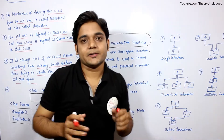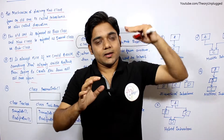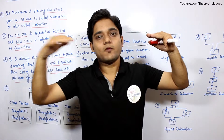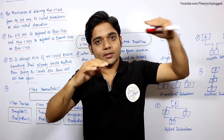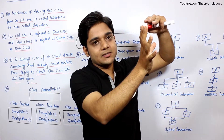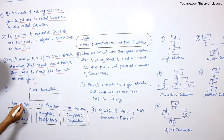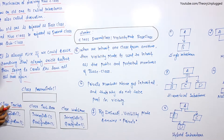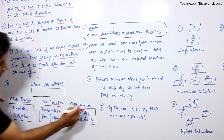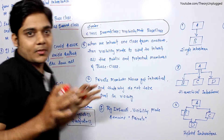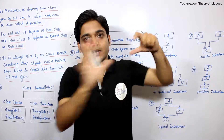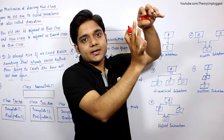एक example की बात करते हैं — मान लो हमारे पास एक college campus है और college campus में teachers, students और watchman तीनों को लेना है। तो हमारे पास class Teacher, class Technical Assistant और class Watchman — college campus में तीन classes बनानी हैं।